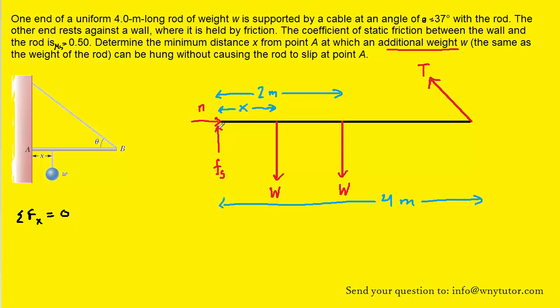We'll notice that there are two forces acting in the x direction. We have this normal force pointing to the right and then we have the x component of tension pointing to the left. In fact we should draw those components right here first. Recalling that the angle between the tension force and the rod was stated as 37 degrees. The x component is T cos 37 and the y component is T sin 37.